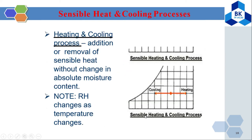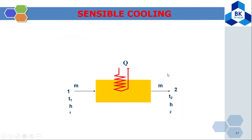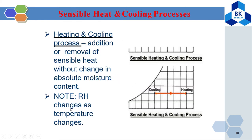Sensible cooling is the opposite procedure to sensible heating — heat is removed, but the amount of water in the air does not change. The sensible heating and cooling process involves addition or removal of sensible heat without change of the absolute moisture content. Note that although the absolute humidity does not change, the relative humidity does change as temperature changes. On the psychrometric chart, heating moves to the right and cooling moves to the left.